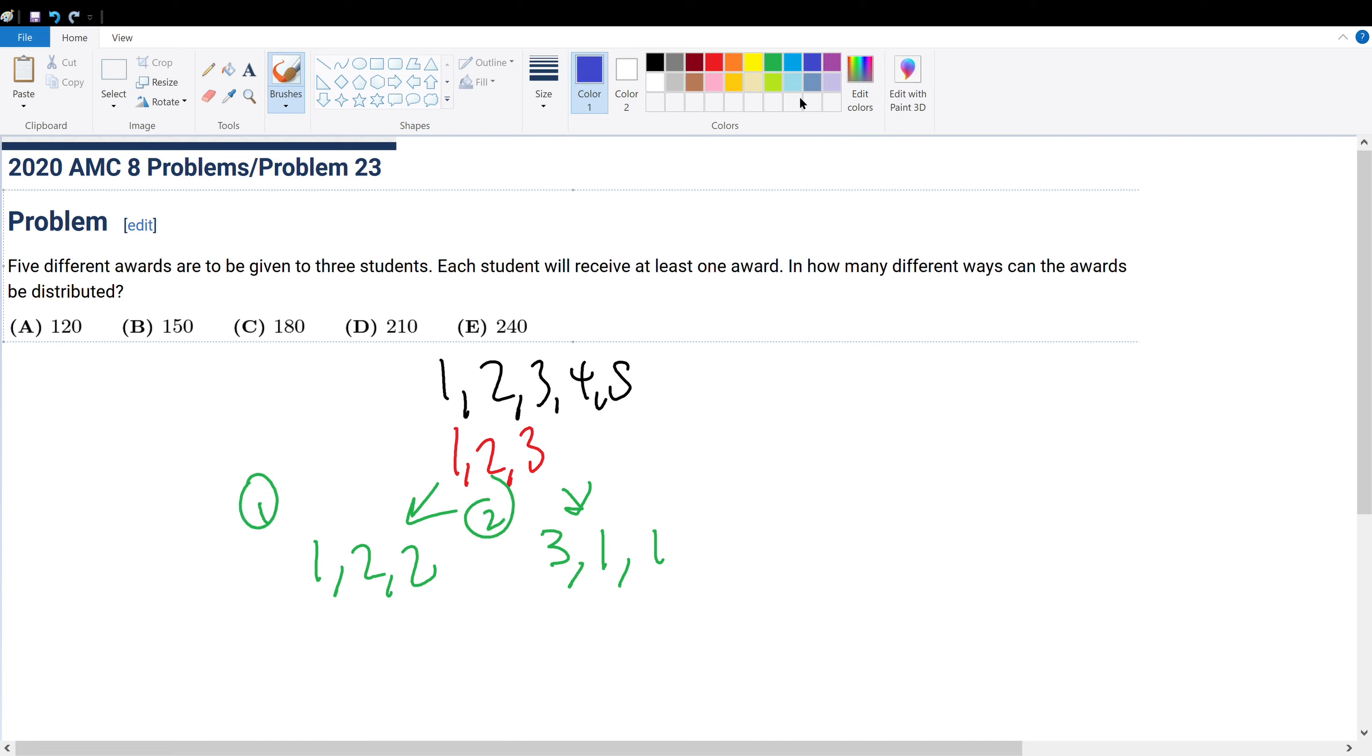Let's do this first test case. How many ways are there to choose this one student from three total students to get one award? So three choose one. And he could pick any award that he likes, so five choose one. Now, for this student right here, how many ways does he have to pick out prizes that he likes?